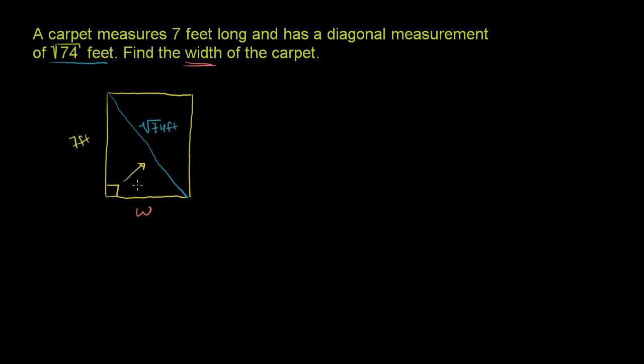And the shorter sides are W and 7. The Pythagorean theorem tells us that the sum of the squares of the shorter sides will be equal to the square of the hypotenuse, or the square of the longest side.